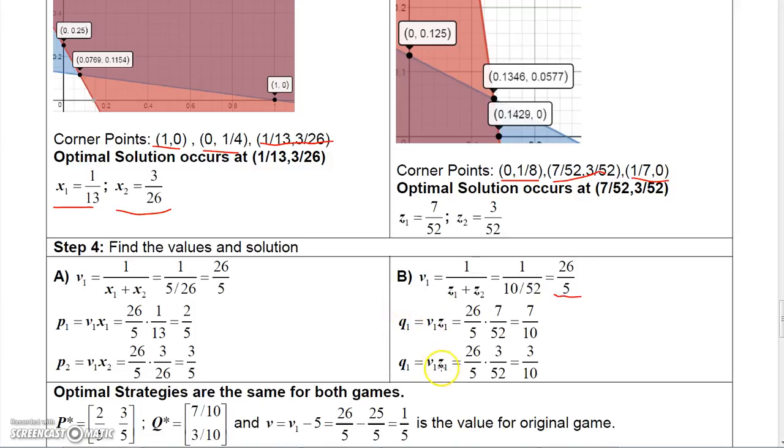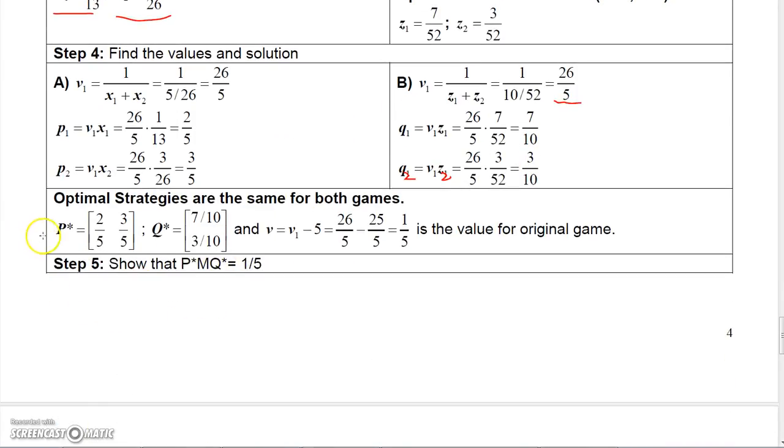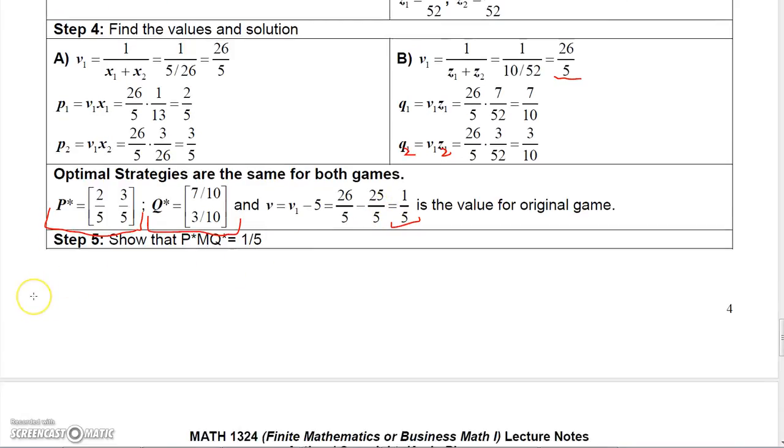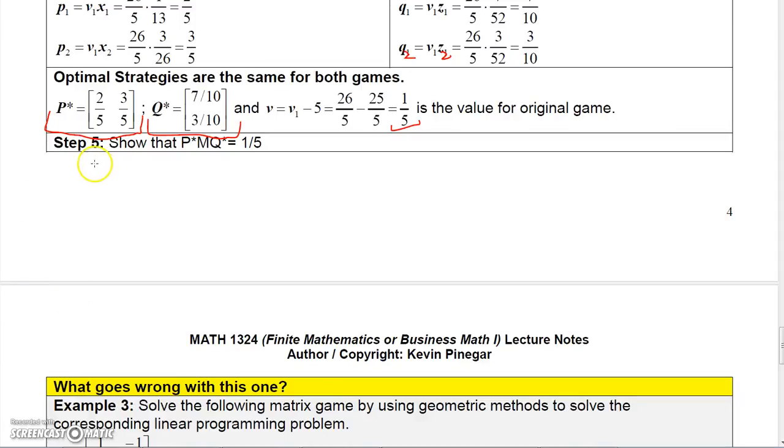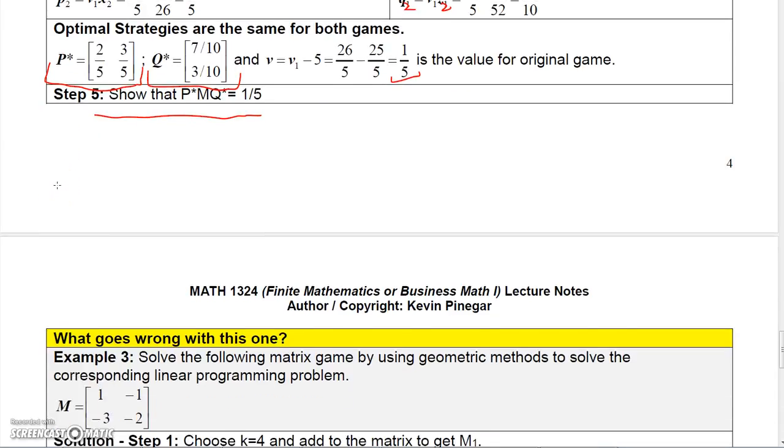You're going to get Q1 by taking V1 times Z1. So 26 fifths times 7 52 gives you 7 tenths. Q2 is V1 times Z2, which is 26 fifths times 3 52, which is 3 tenths. So now my strategy for player R is P star, strategy for player C is Q star. V would be V1 minus 5. So 26 fifths minus 25 fifths would be 1 fifth, and that's the value of the original game. You can show that's true by just multiplying P star times M times Q star to see that you get the 1 fifth.